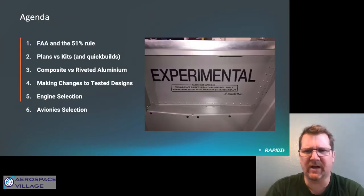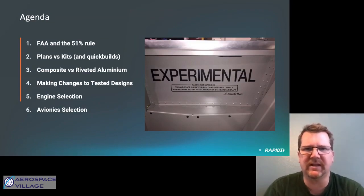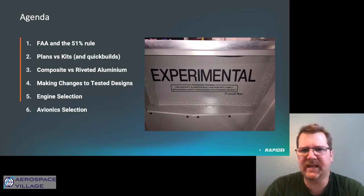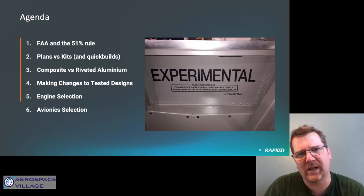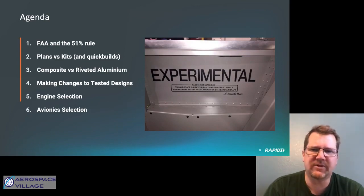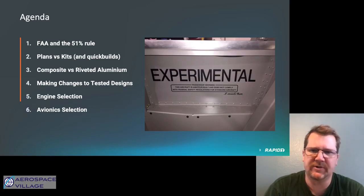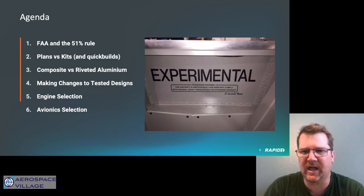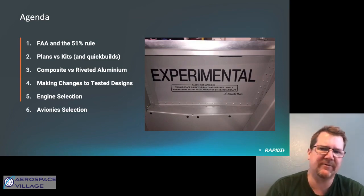Here's a quick overview of the agenda. We're going to talk about FAA regulations very lightly, and specifically the 51% rule, plans and kits, a little bit on quick builds as well. Composite versus riveted aluminum construction — basically the construction materials you can choose to build your frame out of. A little treatise on making changes to tested designs, engine selection, avionics, and then a little bit about the final steps after you've completed.